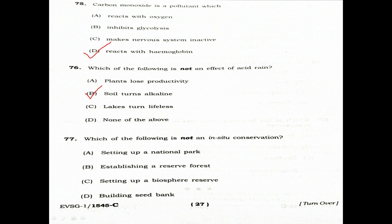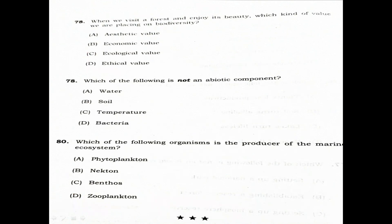Which of the following is not an in-situ conservation? Option A: Setting up a national park. Option B: Establishing a reserve forest. Option C: Setting up a biosphere reserve. Option D: Building a seed bank. The correct answer is D — building a seed bank is not an in-situ conservation method.